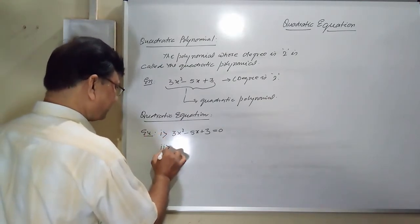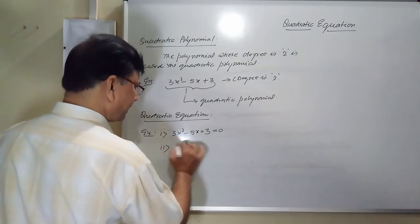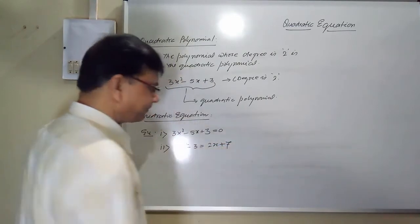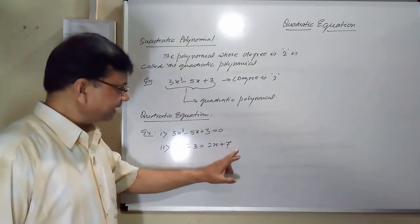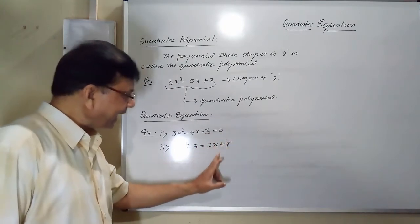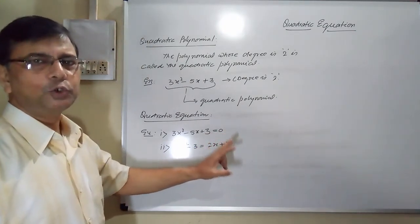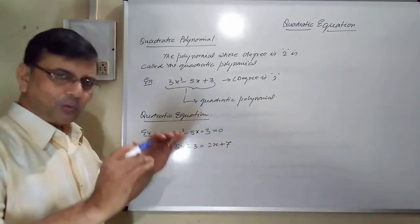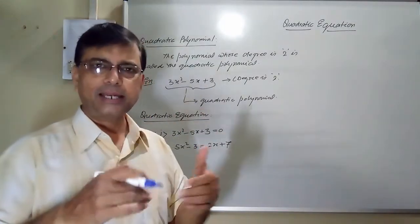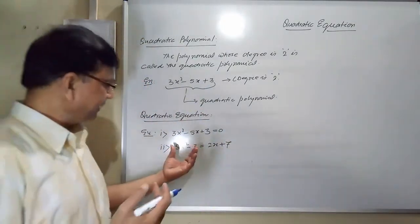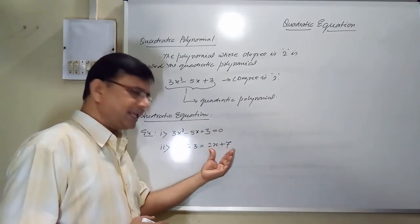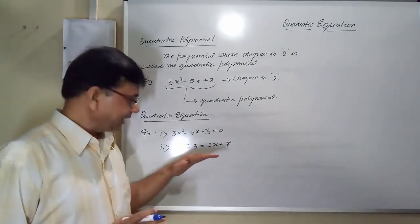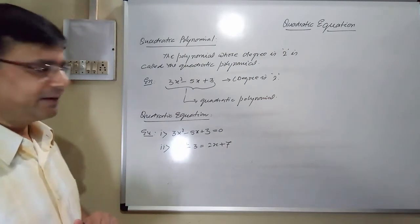Second example: 5x² − 3 = 2x + 7. Here it is equated to something, and on the right side the highest power is not more than 2, so this is also a quadratic equation. Third example: 7x − 2 = 5x² + 6x + 1. This is also a quadratic equation because if we shift terms, one side becomes 0 and the other side has degree 2.